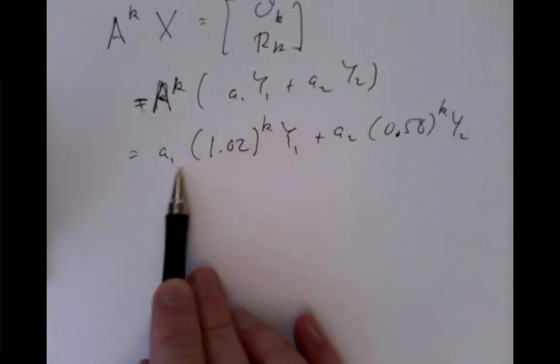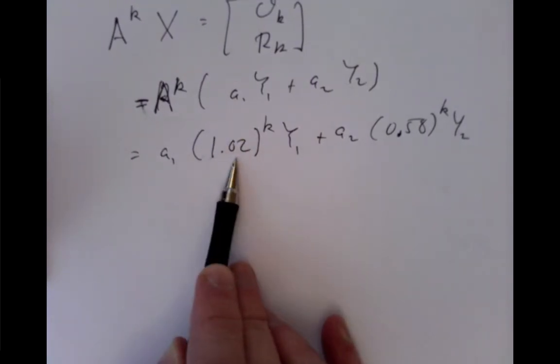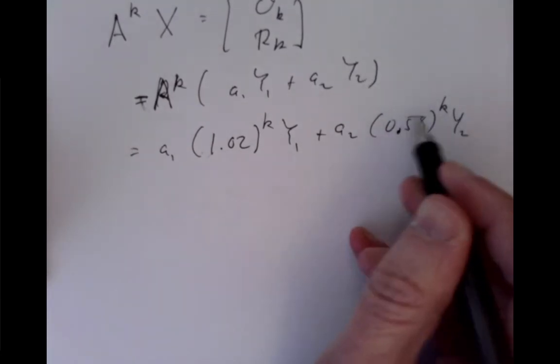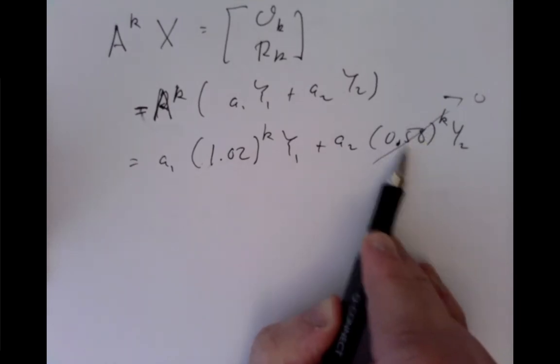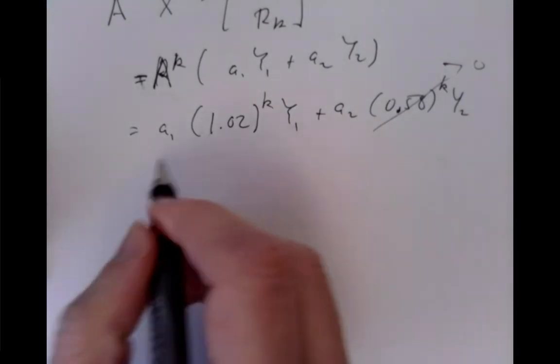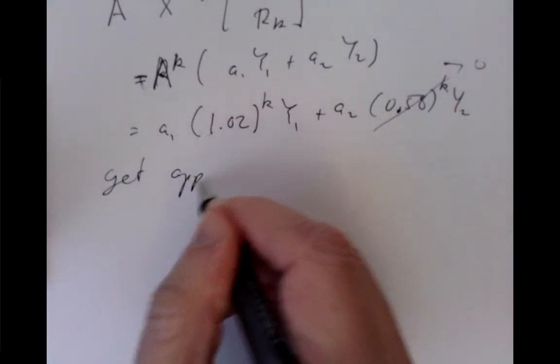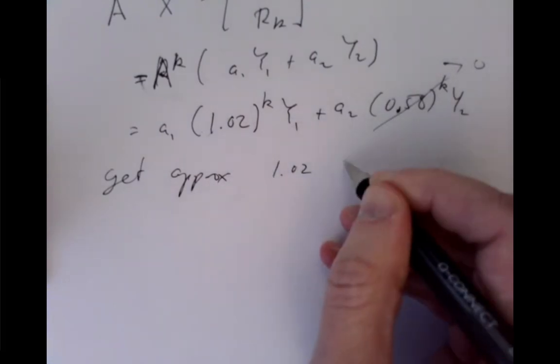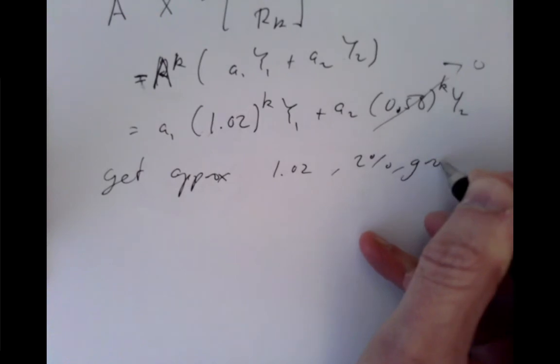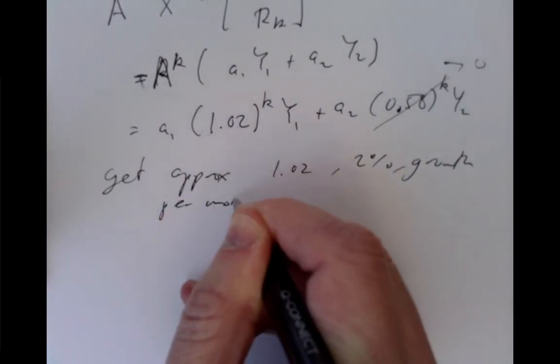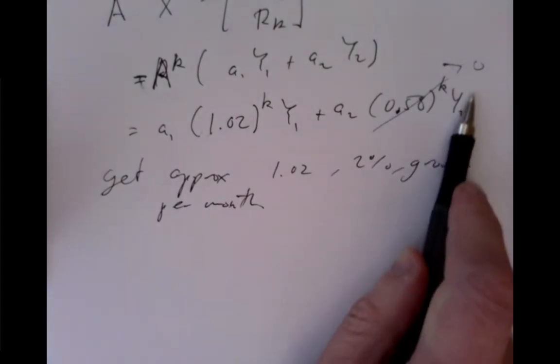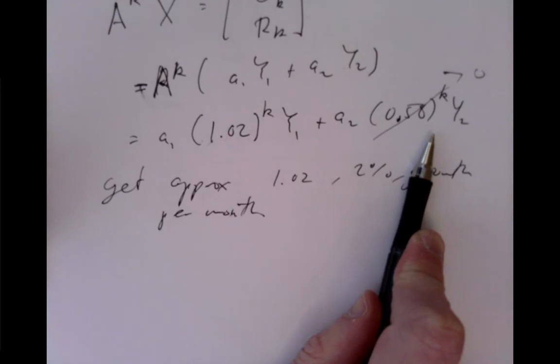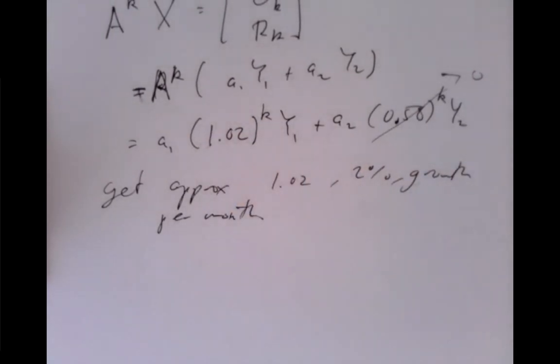This component of the story stays approximately the same, increasing by about 2% every month. This one dies off, and so if we send k to become very, very large, 0.58^k, smaller than 1, it becomes very, very small, and so this disappears. And so we get approximately 1.02, so 2% growth per month after long periods of time. So after you wait long enough, no matter how much and what initial data of owls and rats you start with, you'd expect pretty much that unless you happen to exactly hit a multiple of y_2 as your capital X initial values, anything else you'd expect eventually to behave like a 2% growth.